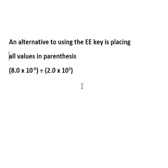An alternative to using the EE key is placing all of the values in parentheses. So 8 times 10 to the minus 6, we put that in parentheses, and then divide by 2 times 10 to the third. That way, we can use the multiplication symbol and then the 10 and take the 10 to the actual power. I find this to be really cumbersome, and if you forget to put a parentheses, then you'll get a syntax error, and it can really be time-consuming.